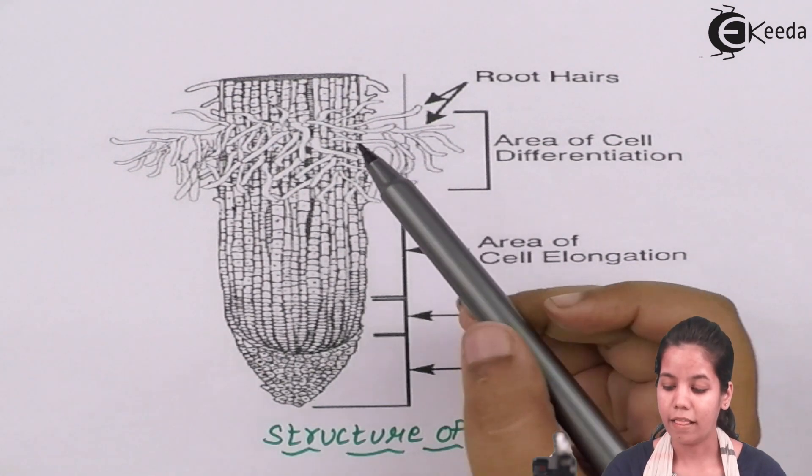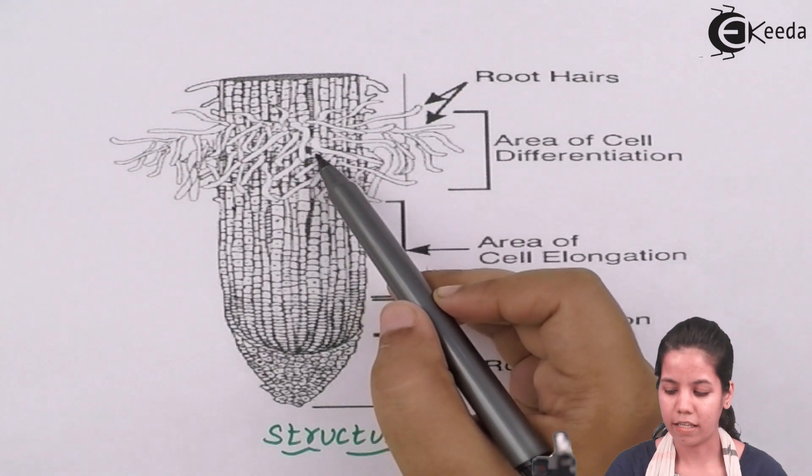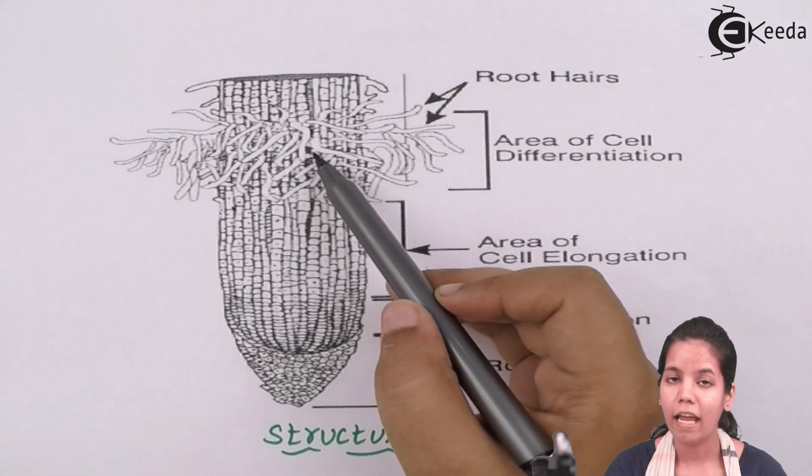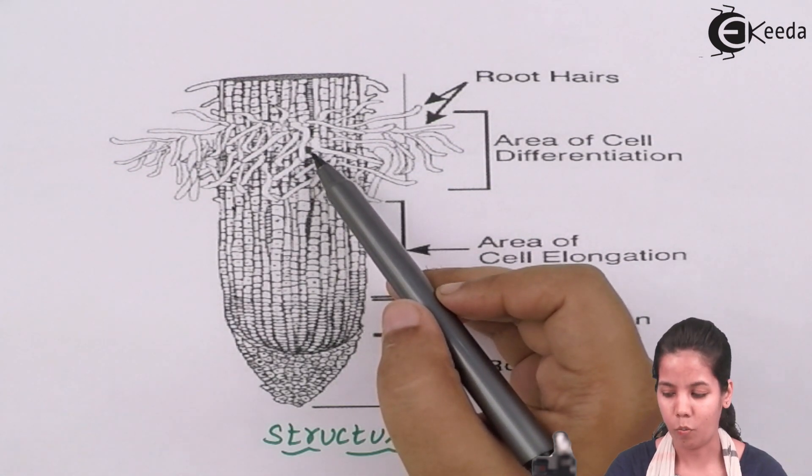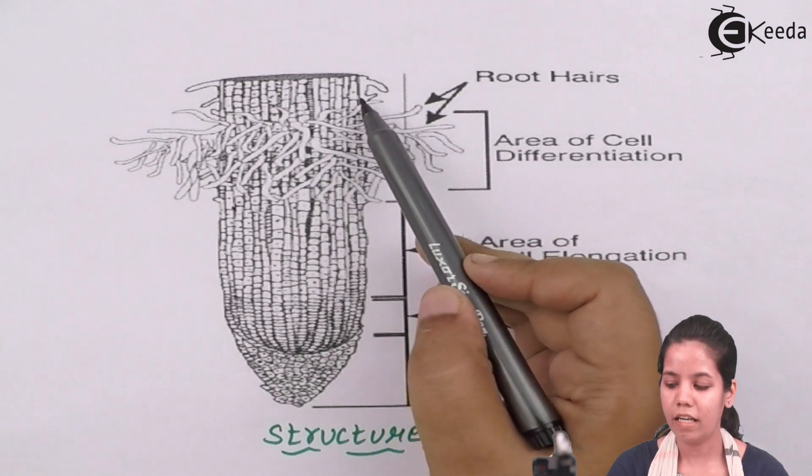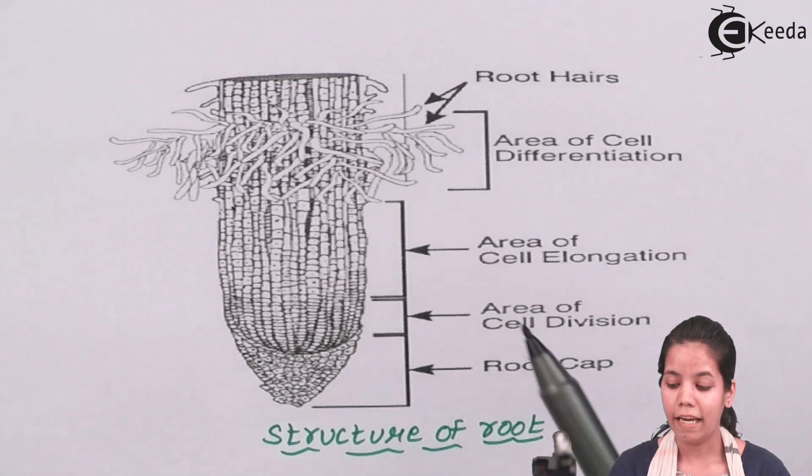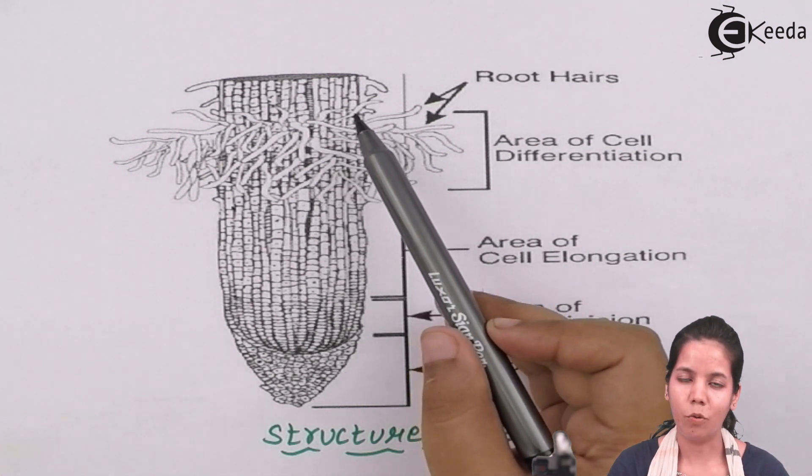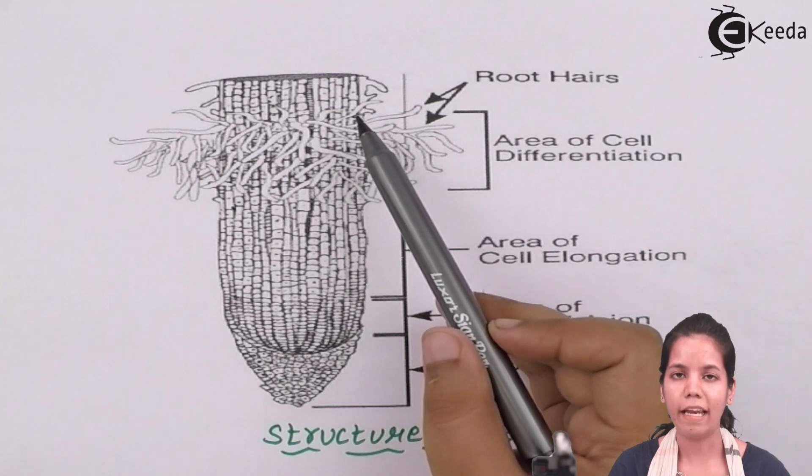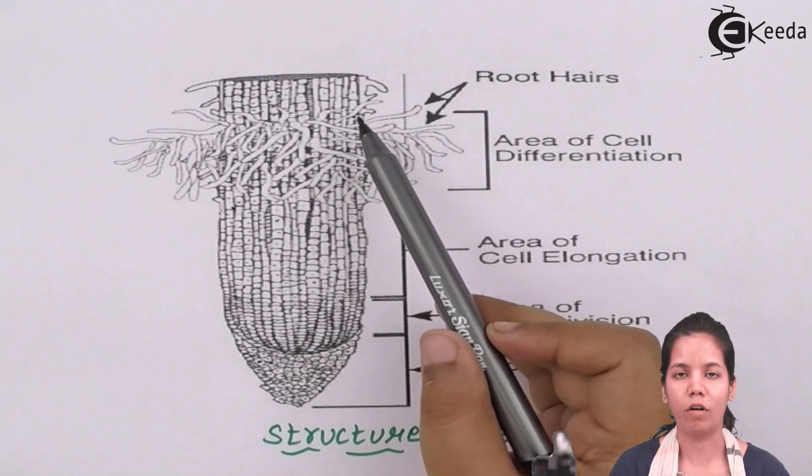Just above the region of elongation there are root-like structures or hairy structures. And these hairy structures are nothing but root hairs which absorb water. And finally you have the area of differentiation or the area of maturation, in which cell gets to know its function. Each and every cell in the root knows what they have to do and how they have to function or work.